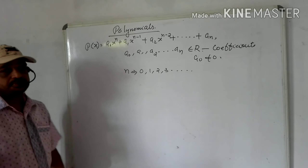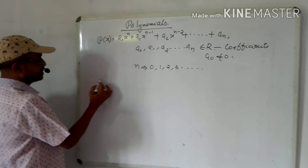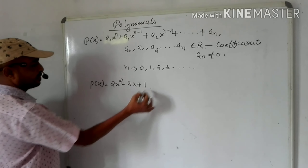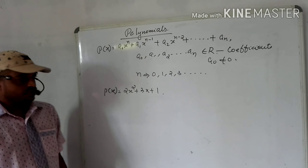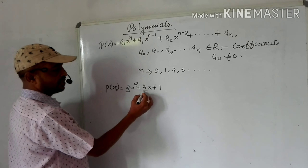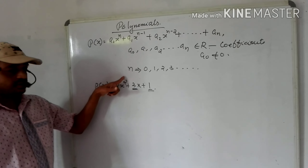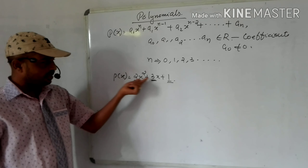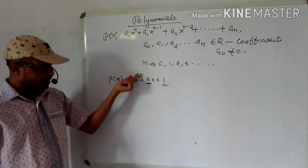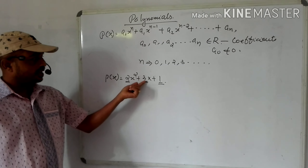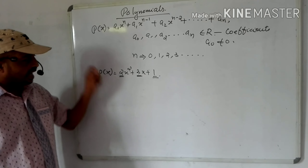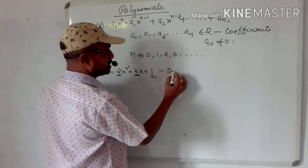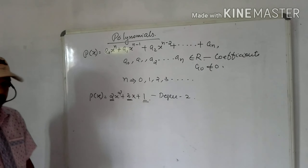For example, p(x) = 2x² + 3x + 1 is a polynomial. The coefficients are 2, 3, and 1, which are real numbers. The variable is x, and the highest power of the variable is 2, so this is a second degree polynomial — a polynomial of degree 2.